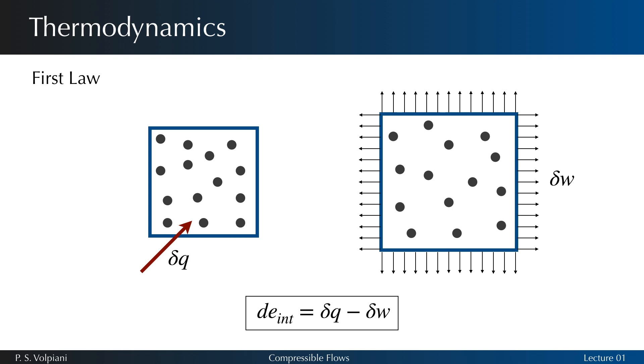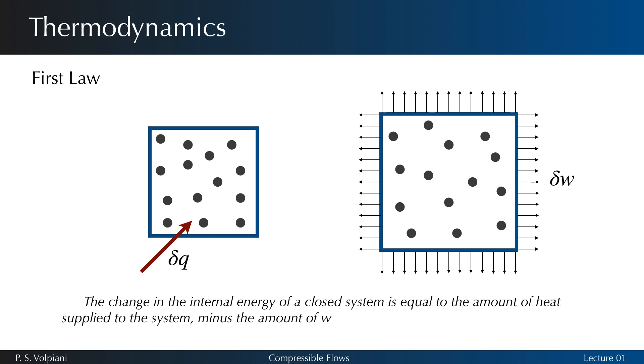Also, let de_int be the corresponding change in internal energy per unit mass. Then, simply on the basis of empirical observation confirmed by laboratory results, we can write de_int = δQ - δW. The first law of thermodynamics states that the change in the internal energy of a closed system is equal to the amount of heat supplied to the system minus the amount of work done by the system on its surroundings.